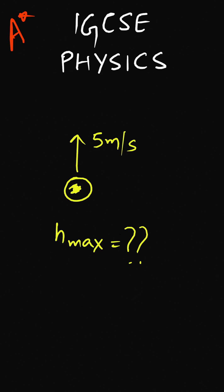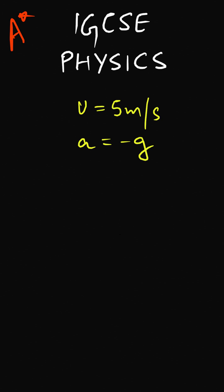The first step that we should do is to write the given information which includes the initial velocity represented by u as 5 meters per second. Since the ball moves vertically upwards, that is in a direction opposite to the acceleration due to gravity, therefore the acceleration should be taken as minus g. That is, the acceleration in our case should be minus 9.8 meters per second squared.